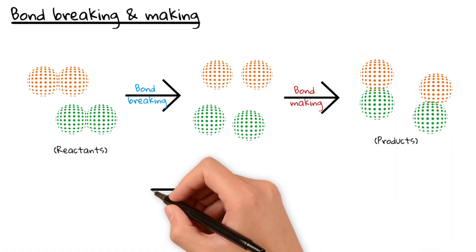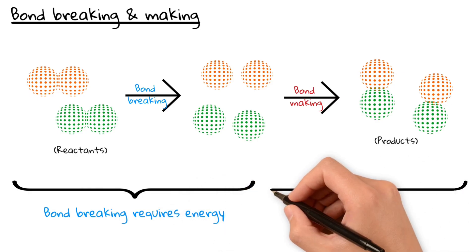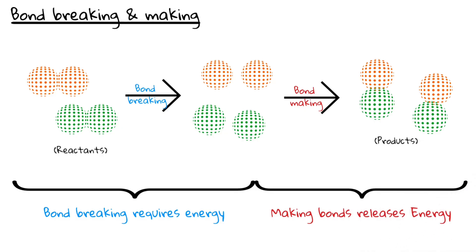Here's the key idea. Breaking bonds requires energy, so energy is absorbed from the surroundings. Making bonds, on the other hand, releases energy into the surroundings.